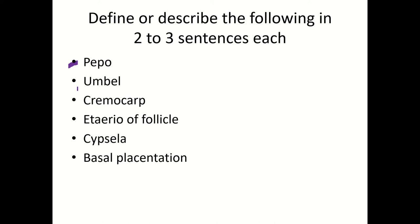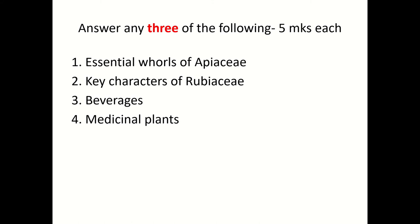The first one is pepo, then umbel, then cremocarb, then aetheria or follicle, then cipcela, and then basal placentation. Please provide appropriate examples to each of these definitions wherever possible.